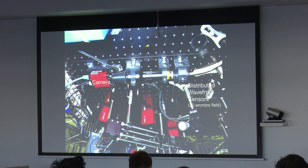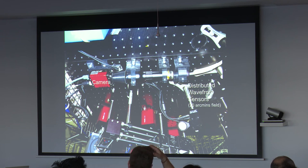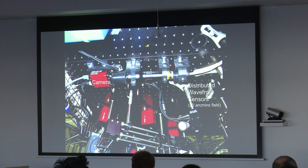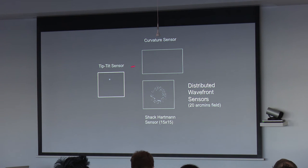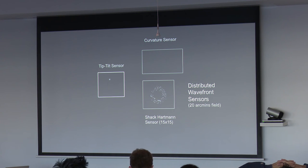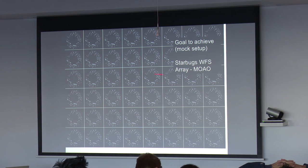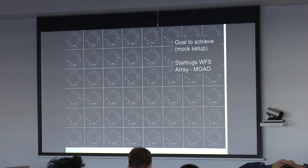We're also looking at distributed wavefront sensors — a research project at the AAO using imaging bundles with 7000 cores — classic polymer bundles — where we can put wavefront sensors on the focal plane and re-image with one camera, so one camera can do multiple wavefront sensors. We can access the full 20 arcminute field of view. We try to image many wavefront sensors in one camera exposure — we have tip-tilt sensors and also a Shack-Hartmann sensor. The idea is to have one low-noise camera serving an array of wavefront sensors, giving a lot of efficiency gains for multi-object AO and telescope diagnostics.